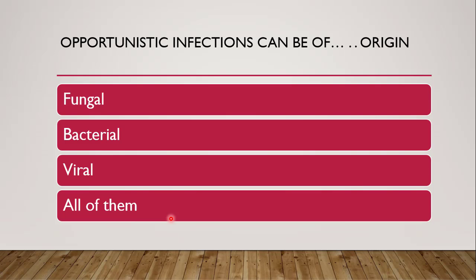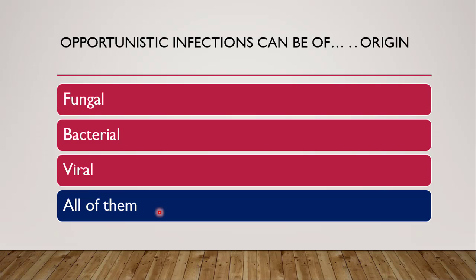Next question: opportunistic infection can be of what origin? Options are fungal origin, bacterial origin, viral origin, or all of them. The correct answer is all of them — opportunistic infections can be of fungal origin, bacterial origin, and viral origin also.